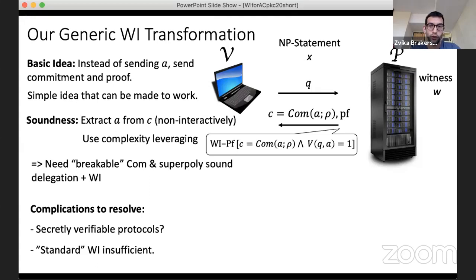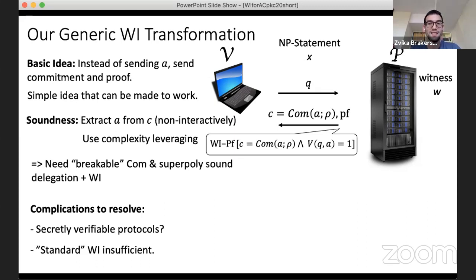In our generic WI transformation, rather than the prover sending response a in the clear, it sends a commitment to a together with a WI proof that the committed value satisfies the verifier. Soundness is preserved because a soundness adversary can break the commitment to extract a, obtaining a cheating prover against the original system. One subtlety: the verifier may need secret information to verify, so the prover doesn't know what to prove in the WI part.